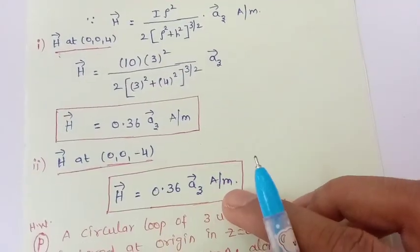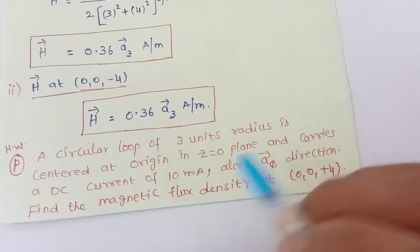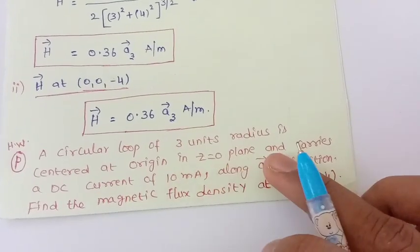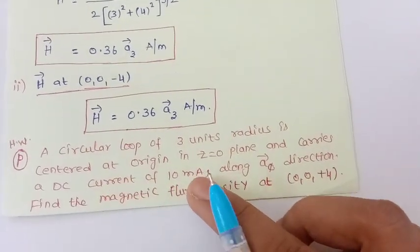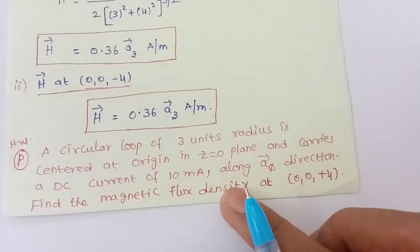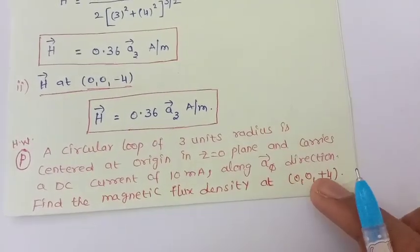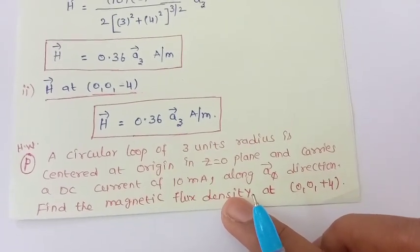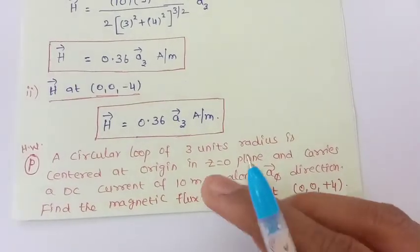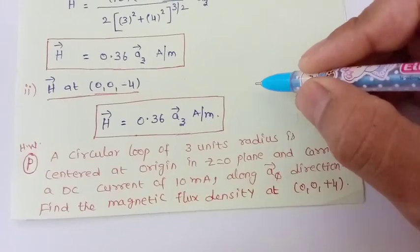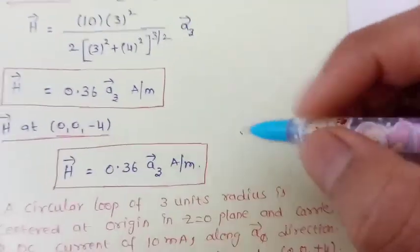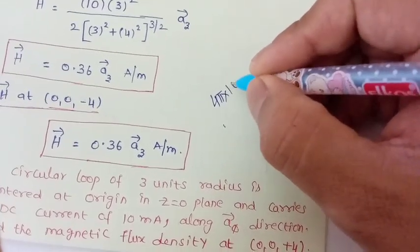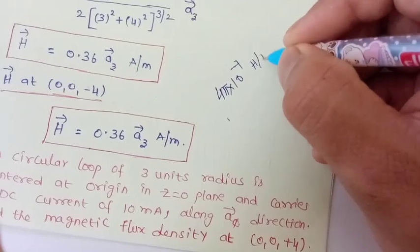H at (0, 0, −4) gives the same result as at (0, 0, 4). As a homework, a circular loop of 3-unit radius centered at origin in the z = 0 plane carries a DC current of 10 milliamperes along the φ-direction. Find the magnetic flux density at (0, 0, 4). After finding H, compute B = μH. Assuming free space, μ₀ = 4π × 10⁻⁷ henry per meter.